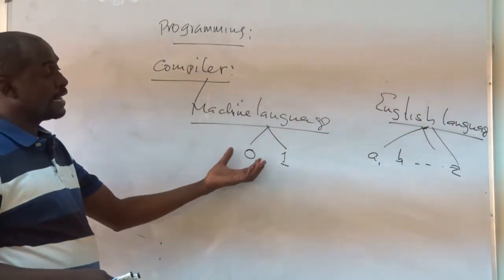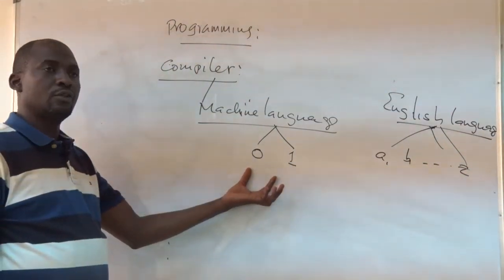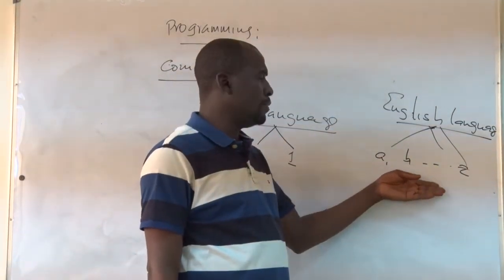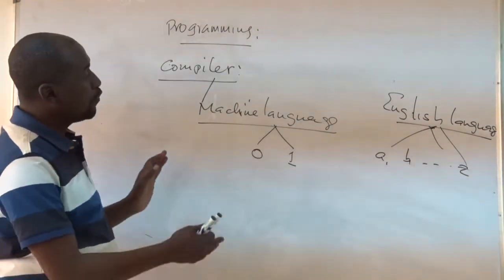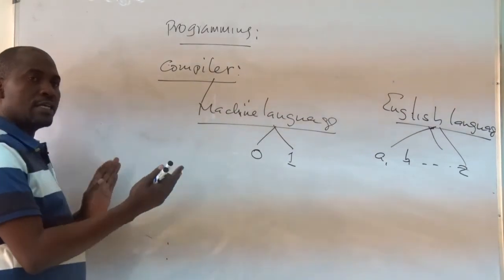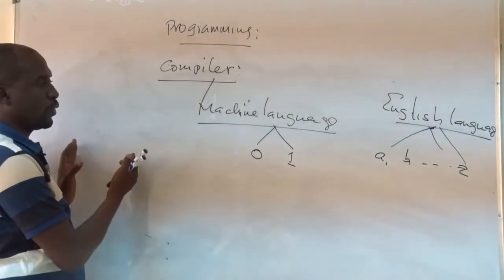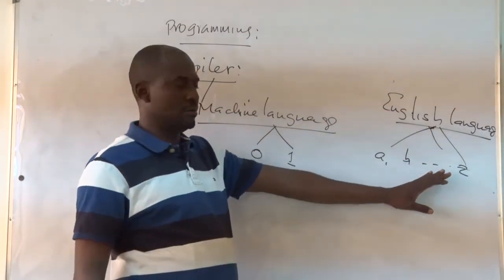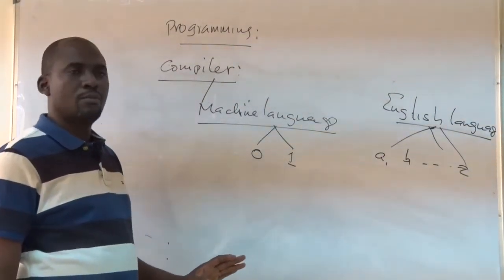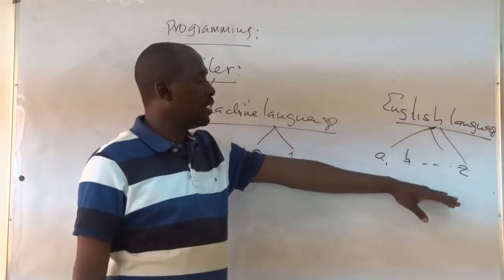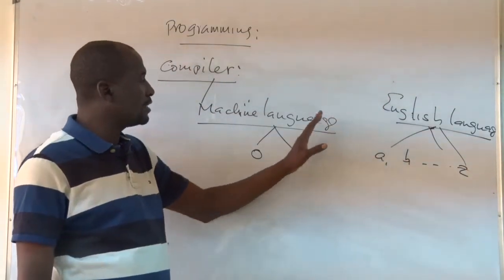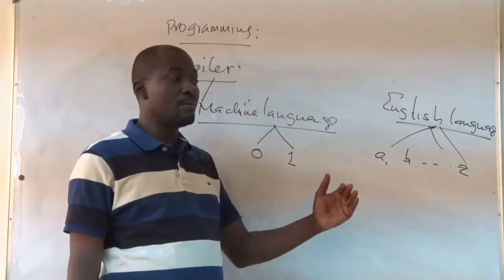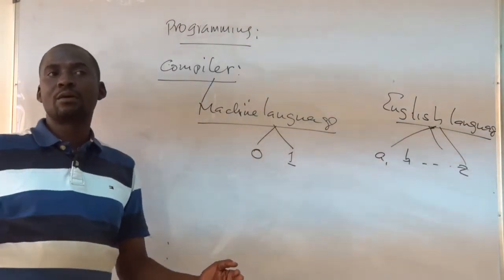Since the computer understands machine language — zeros and ones — and human beings understand normal languages like English with alphabets A to Z, for us to be able to communicate with the computer and write a program, we write using our own language. But the computer doesn't understand this; it only understands machine language. In this kind of scenario, where one party understands one language and another understands a different language, there must be an interpreter.